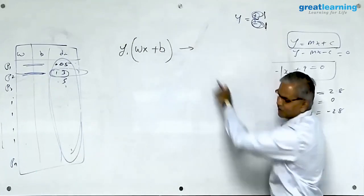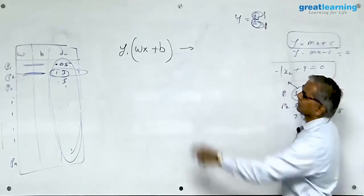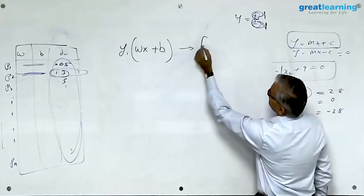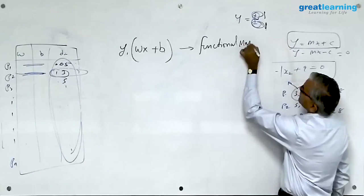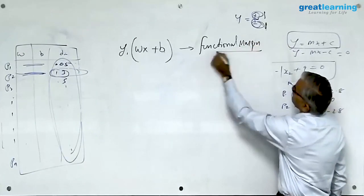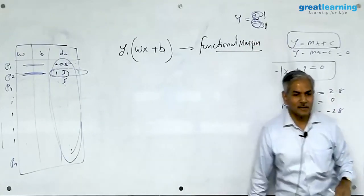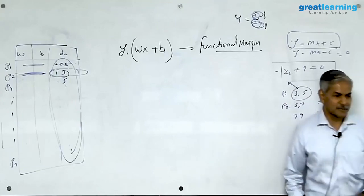In case you people plan to study this, this is called the functional margin. This is given the name functional margin in support vector machines.